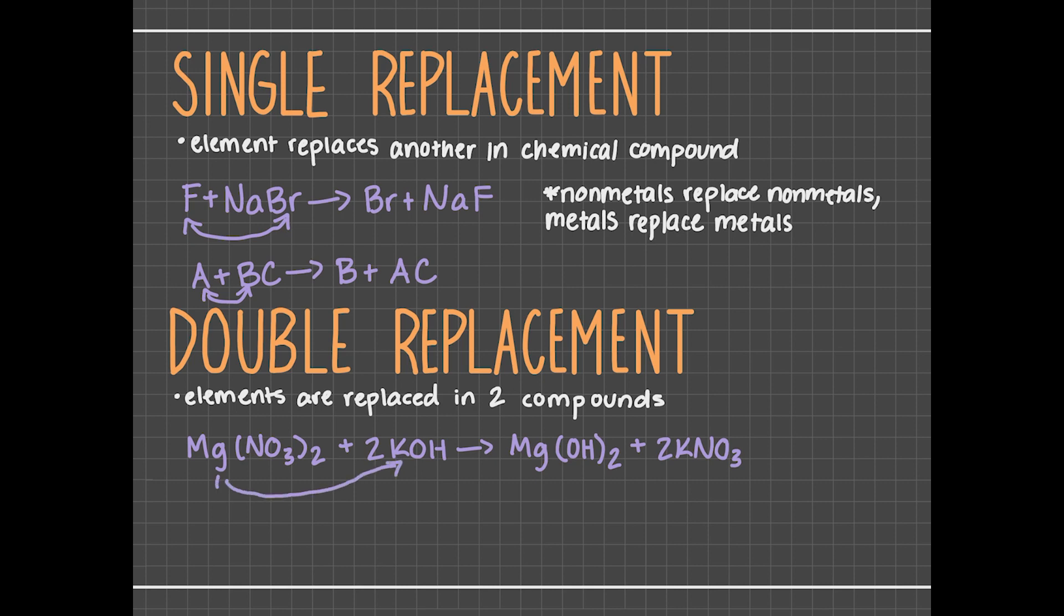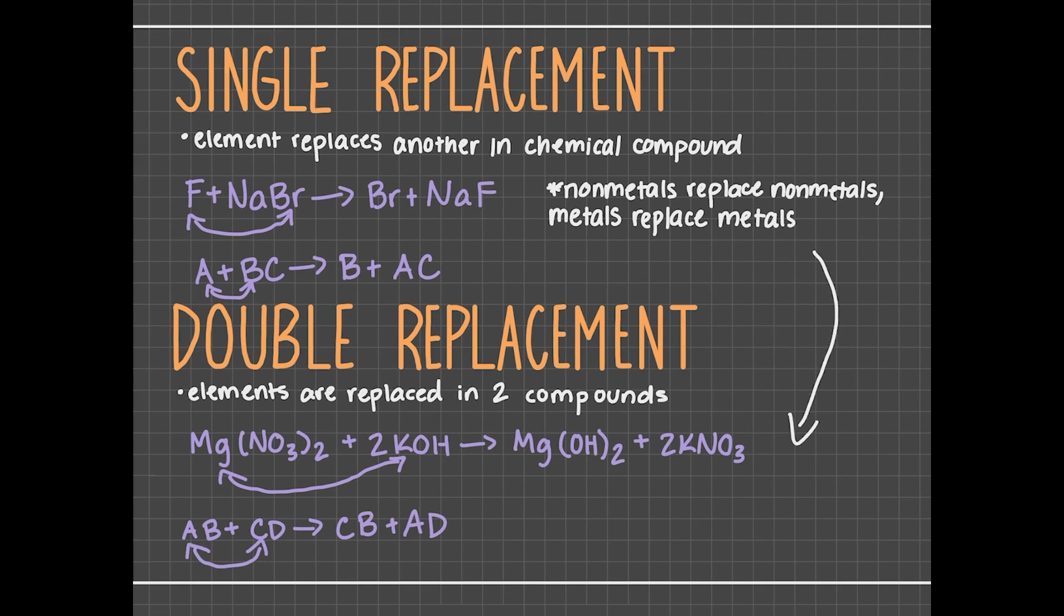The general formula that represents double displacement reactions is AB plus CD produces CB plus AD, where A and C are both either nonmetals or metals.